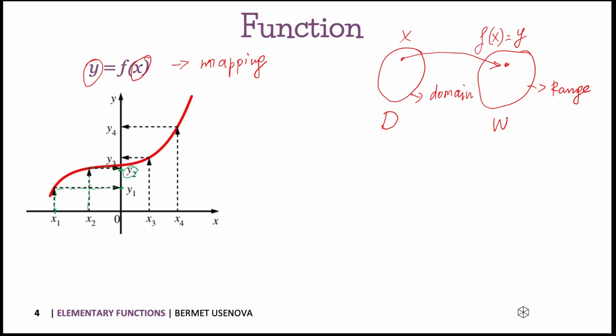We can also visually test it. If a vertical line is drawn through any point of x on the x-axis, for example here, this line will intersect with the graph of the function only at one point here with unique y and x values. So this is called vertical line test.